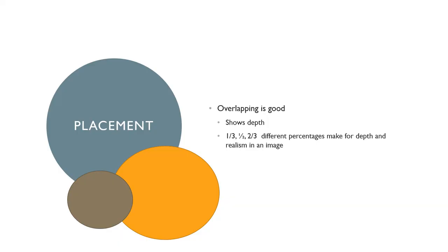Placement is important in your composition. Overlapping is good. It shows depth. One half, two thirds, different percentages and fractions make for depth and realism in an image.